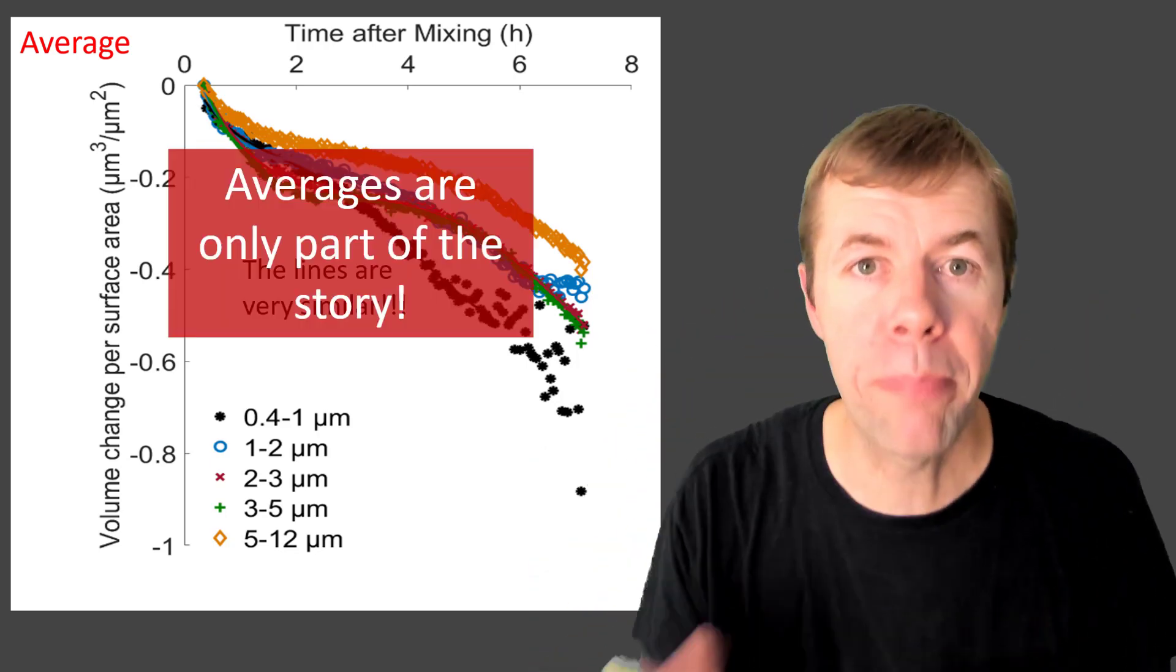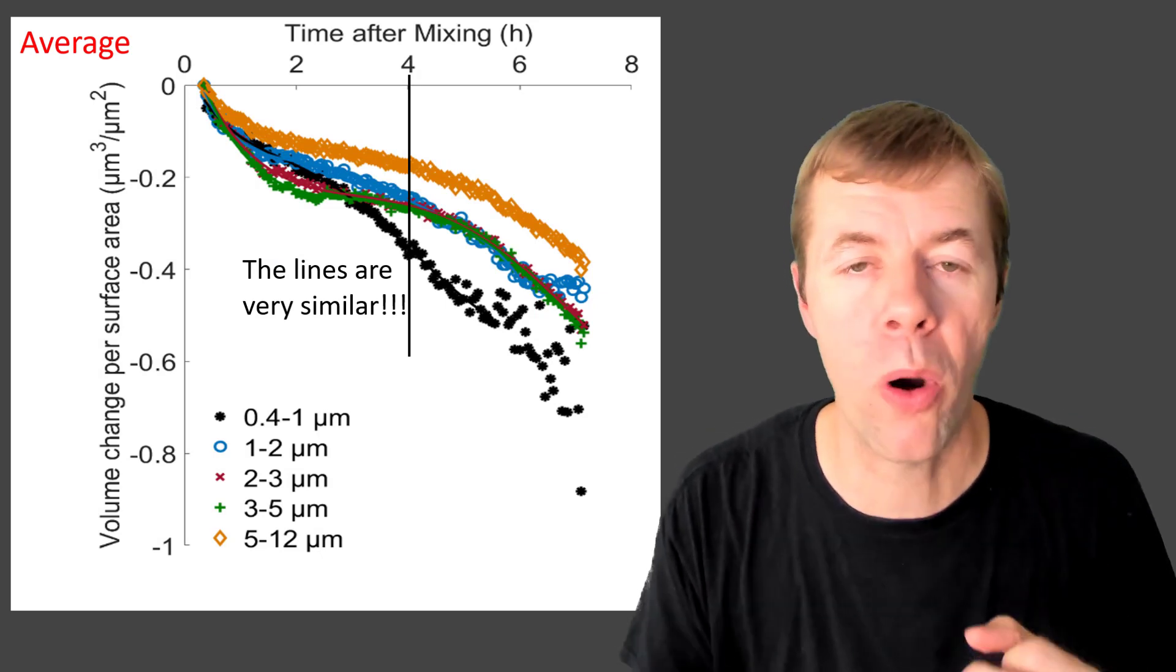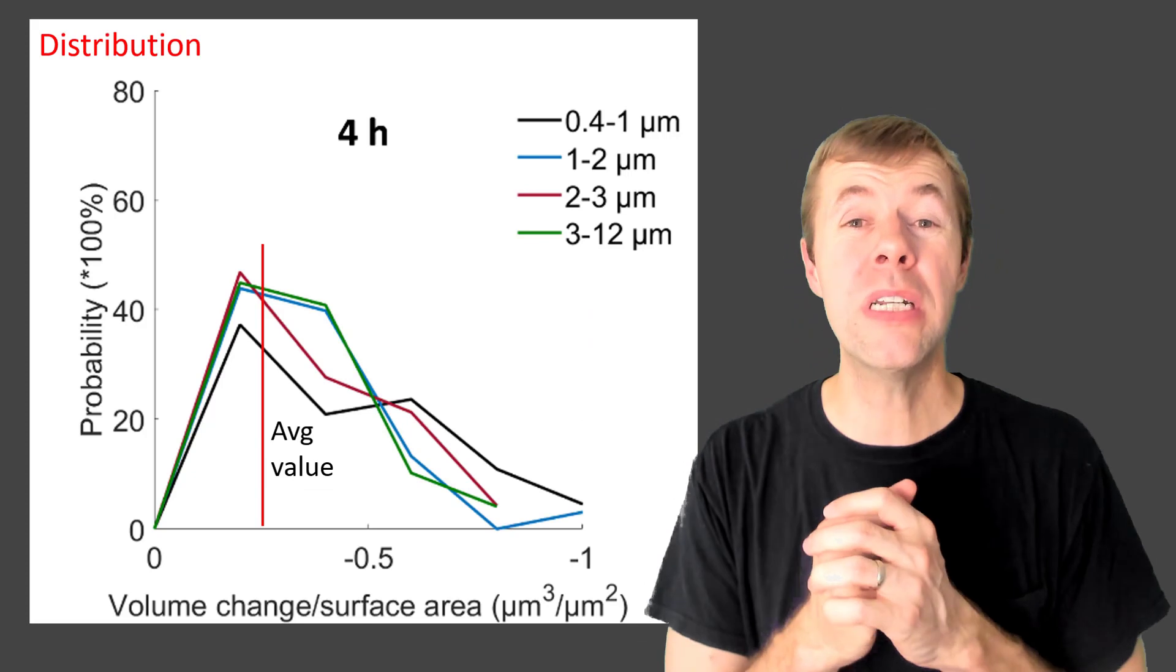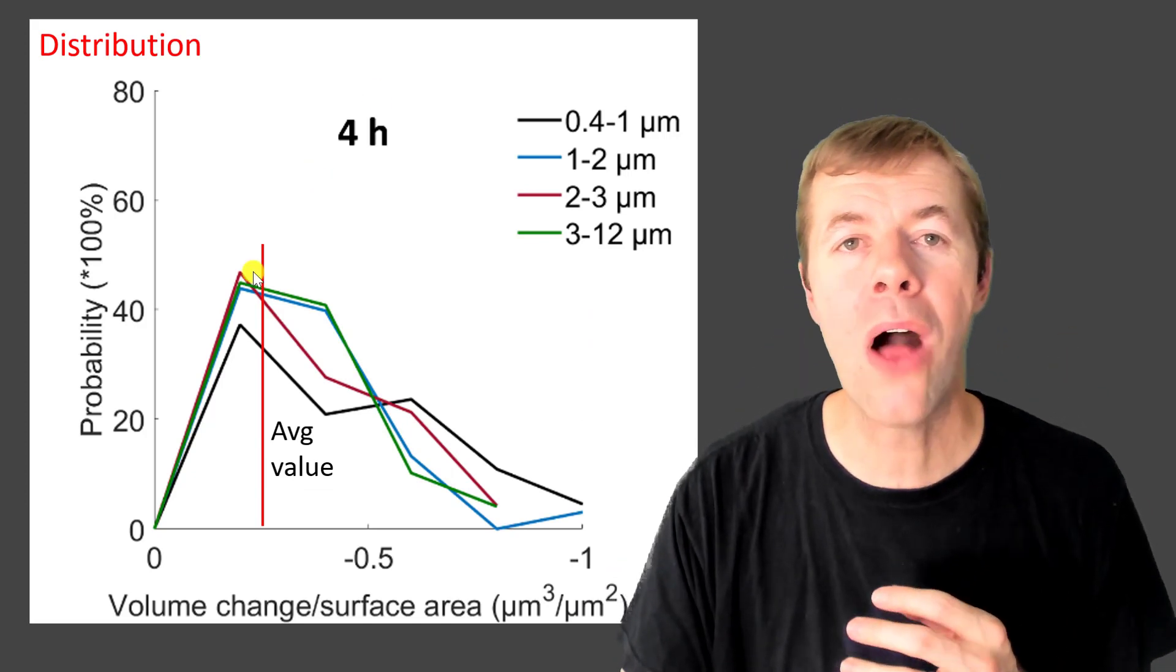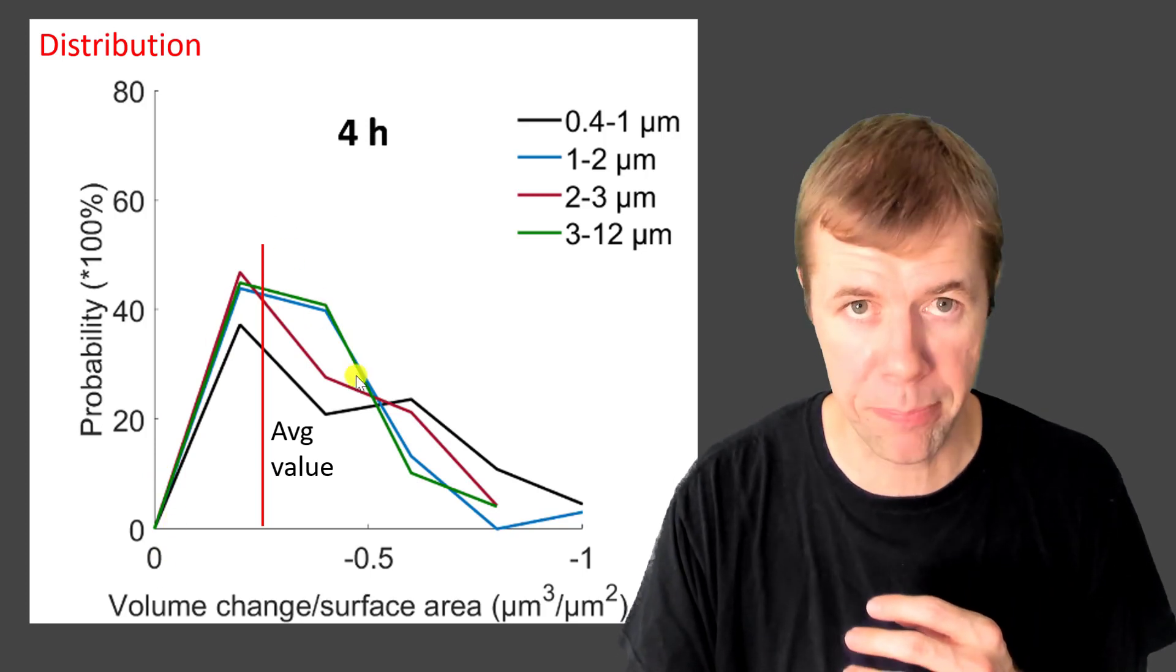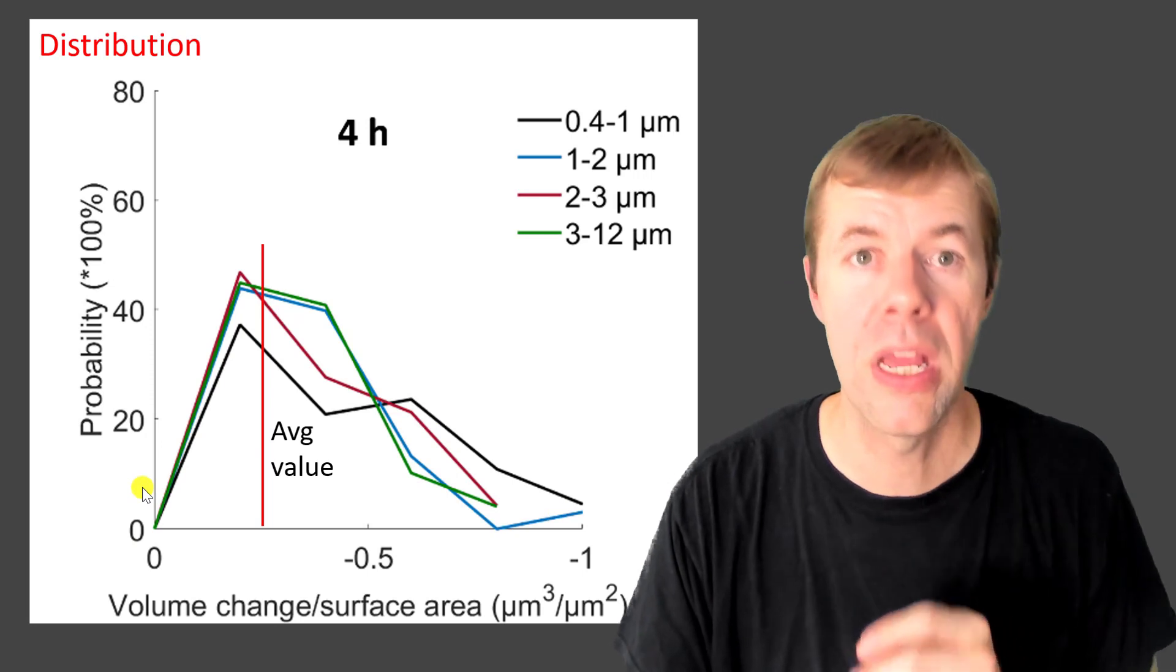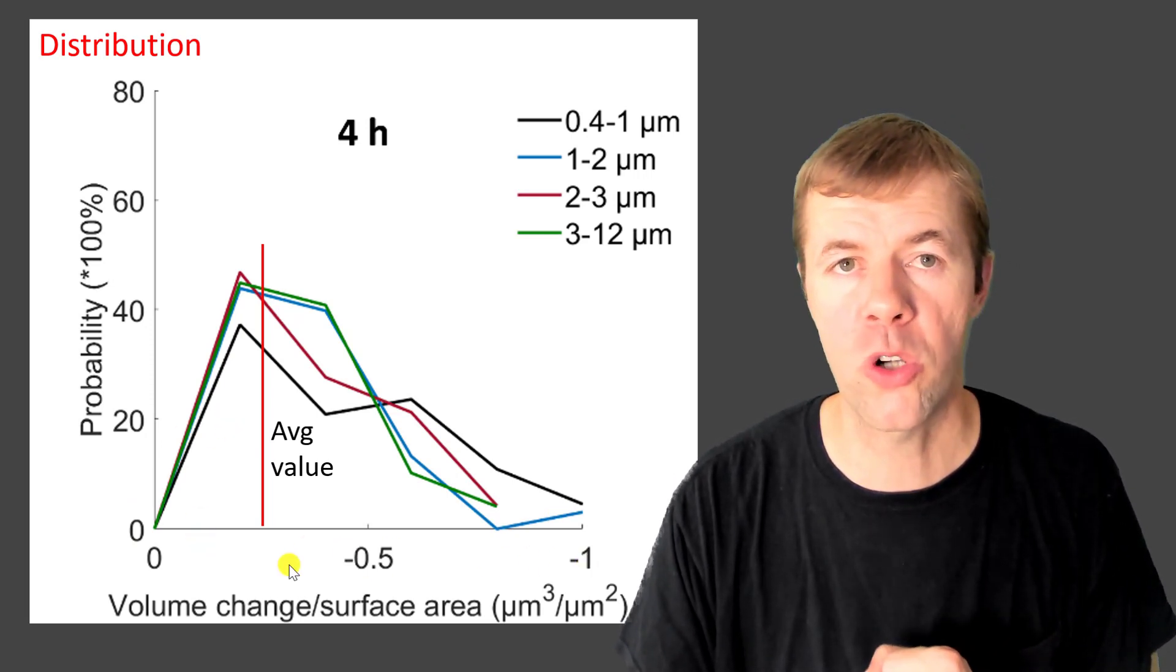But averages are only part of the story. What am I talking about? Let's compare all of these particles at four hours. And I'm showing you a probability distribution curve. What does that mean? That means that this tells you how likely something is to happen. Okay, and it totals to 100%. And on the x axis down here is the volume change per surface area.